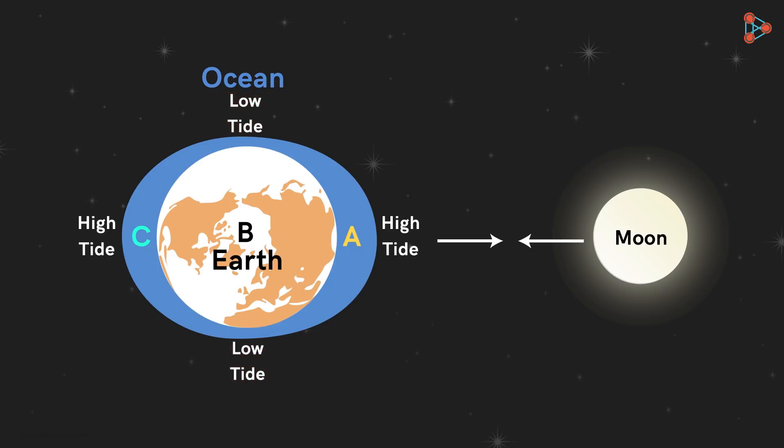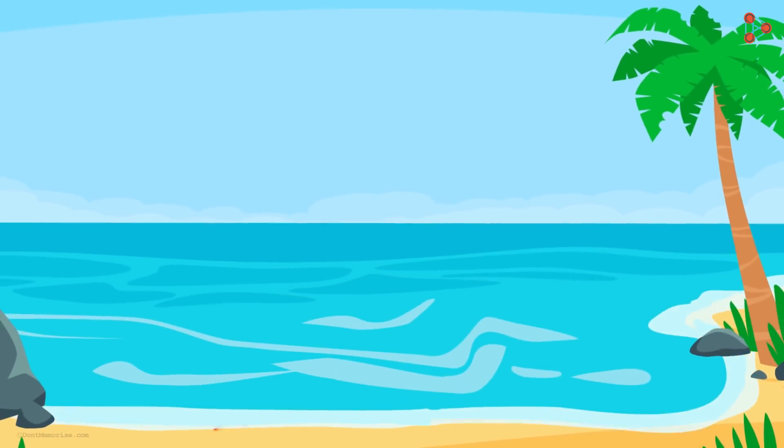Now, we know that the earth rotates around its axis. Thus, the regions experiencing high tides and low tides keep on changing throughout the day with the earth's rotation. With this, we have uncovered the mystery behind the formation of tides.